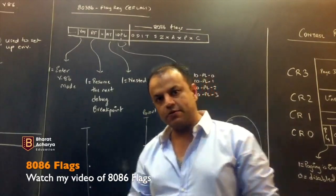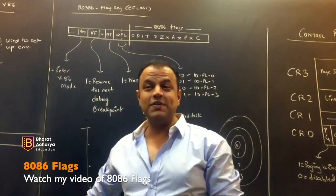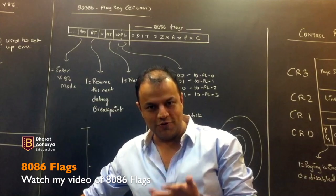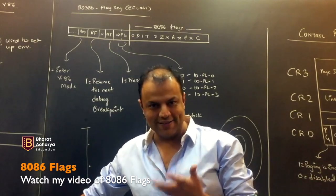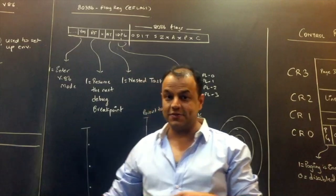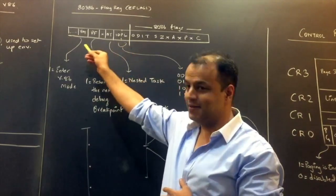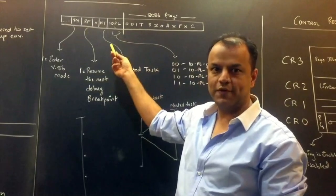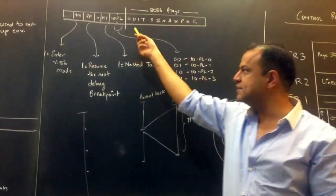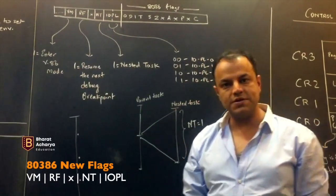Even in the exam — especially Bombay University — if they ask you about the 386 flag register, stick more to the 386-specific flags. That's what they want. If they wanted 8086 flags they would have asked for the 8086 flag register. Especially in a firemark question, your marks are here, not there. You've got to draw the flag register and get the pattern right, but don't waste time explaining the 8086 flags — they don't carry marks in this answer. If it's a 10-mark question, of course you've got to explain all the flags.